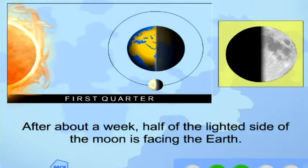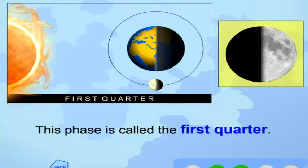After about a week, half of the lighted side of the moon is facing the Earth. This phase is called the first quarter.